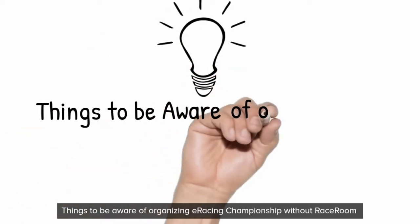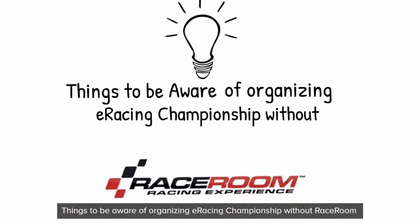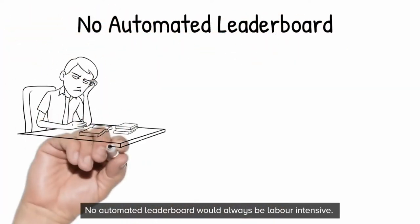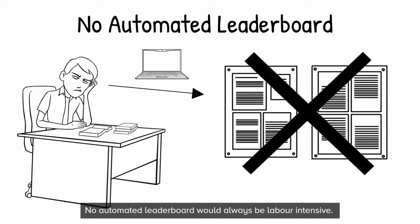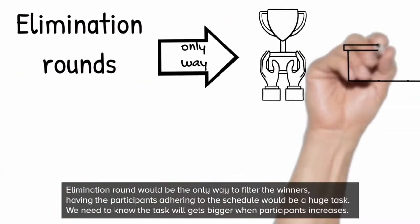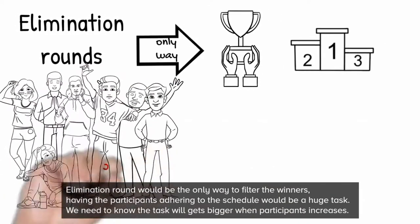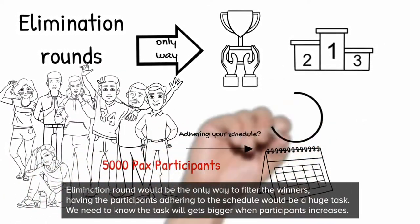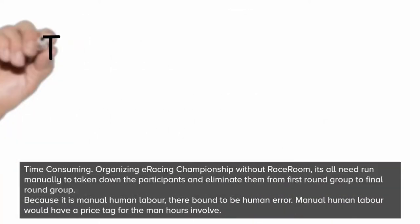Things to be aware of when organizing an e-racing championship without Race Room. First, no automated leaderboard means it would always be labor-intensive. Elimination rounds would be the only way to filter winners, and having participants adhere to the schedule would be a huge test. The task gets bigger when participant numbers increase. It is very time-consuming.